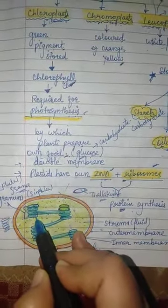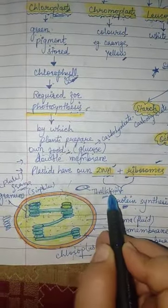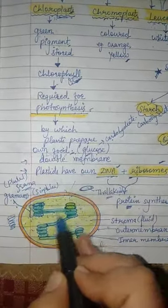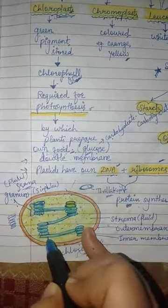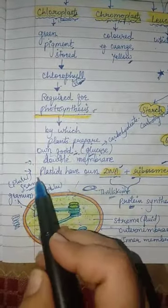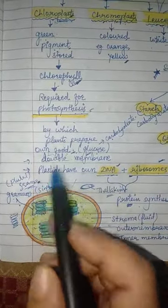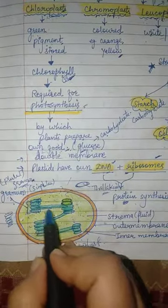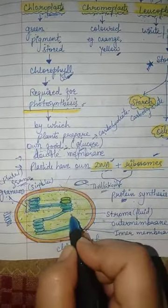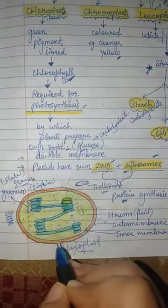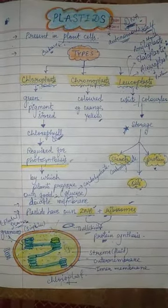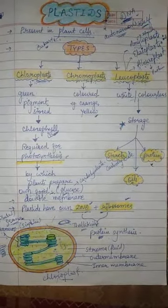Inside the stroma, there are disc-like structures called thylakoids. Multiple thylakoids stacked together form a granum, and multiple grana together make up the grana (plural). The grana are connected by stromal laminae. Ribosomes and DNA are also present inside the chloroplast for protein synthesis. This is all about plastids — read your NCERT thoroughly to prepare this topic.